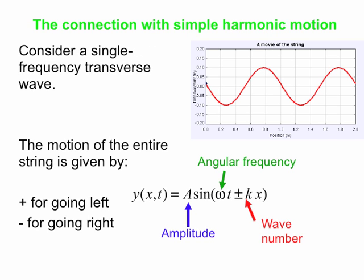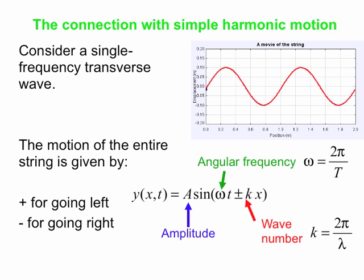Summarizing a few things. The motion of the entire string is y as a function of x and t is A sin(ωt plus or minus kx), plus for the wave going left, minus for the wave going right. We get the amplitude, angular frequency, the wave number. The angular frequency, we remember, is 2π over the period, and the wave number is 2π over the wavelength. That equation describes a wave like this one, transverse wave traveling to the right, so we have the minus sign in the equation.